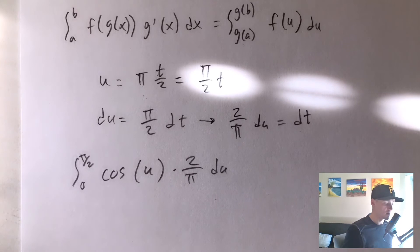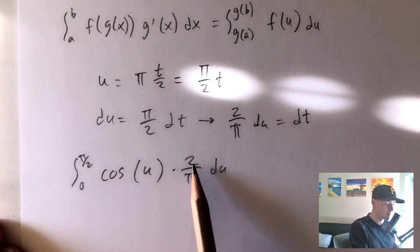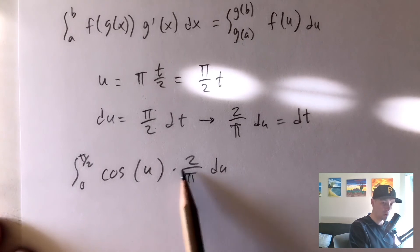So now that we have rewritten this as some integral in terms of u, we can go ahead and evaluate it. It should give us something easier than what we started with, and we will see that it does because this constant 2 over pi here, we can just pull out of our integral.